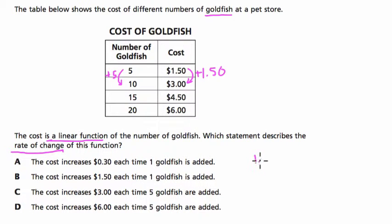We know that it's $1.50 for five. So I'm just going to work this out for a second. If I divide $1.50 by five, I do get $0.30 for every one, right? So it's $0.30. It seems to be $0.30 for every goldfish. $0.30, right?